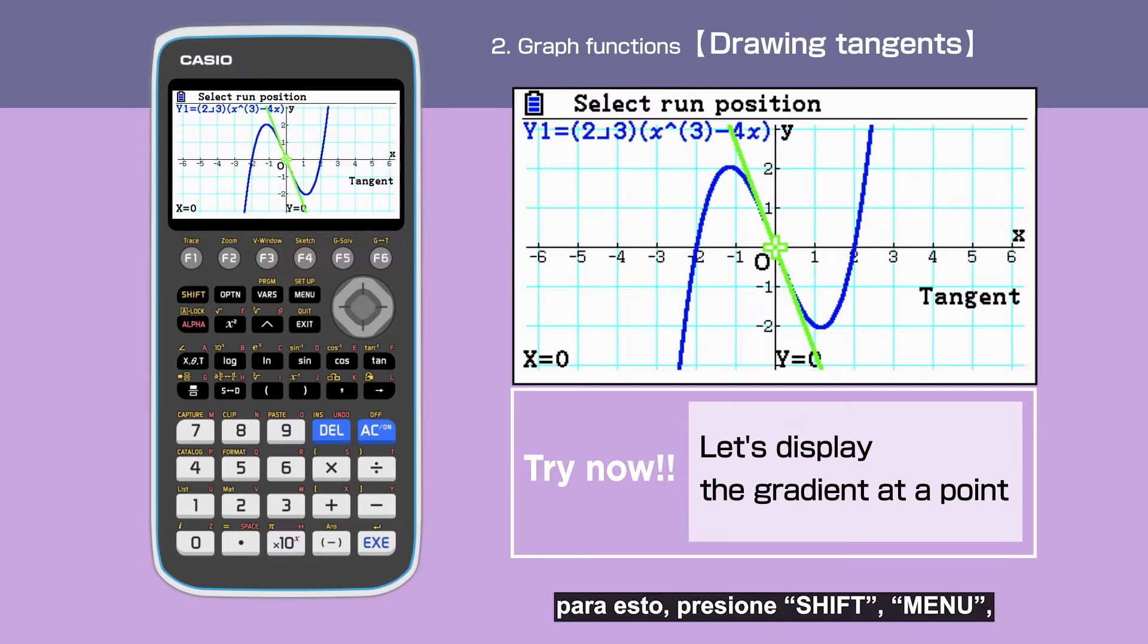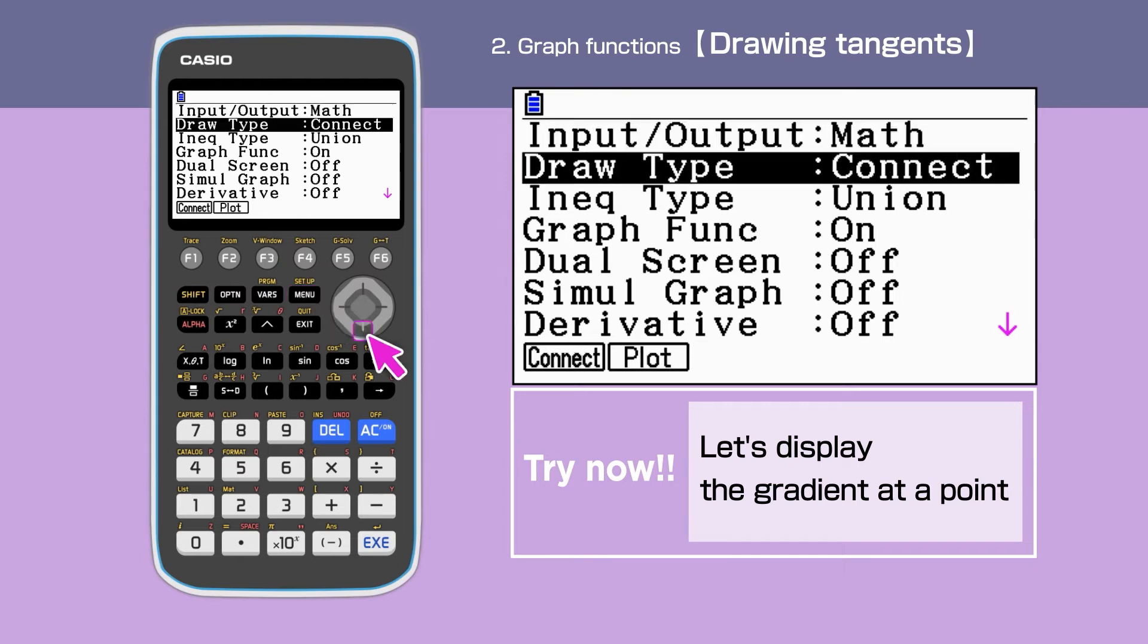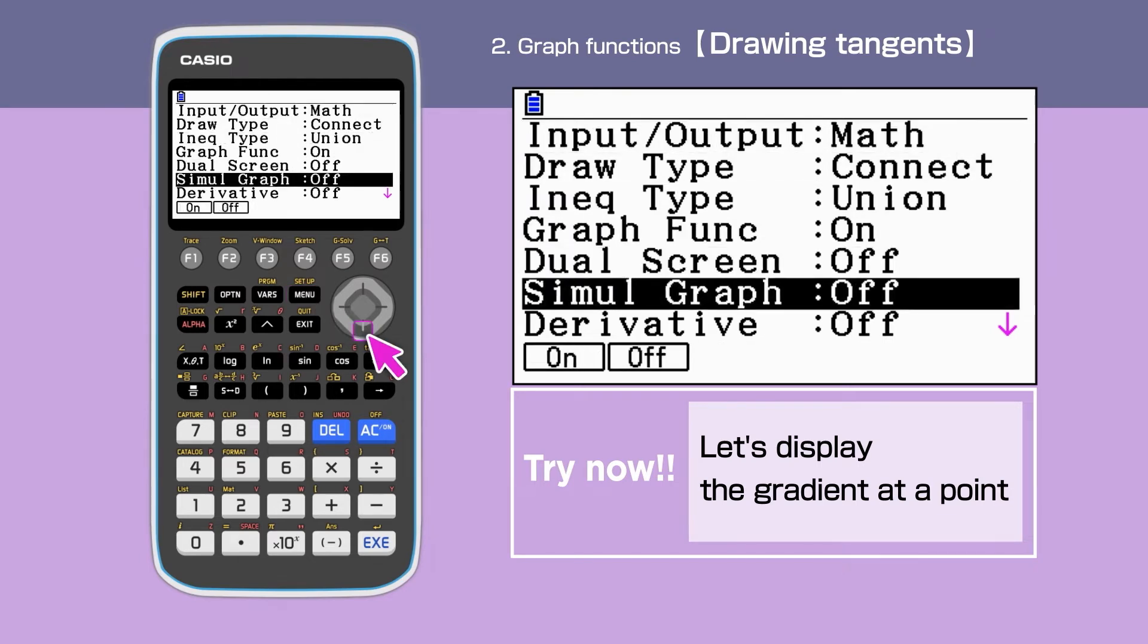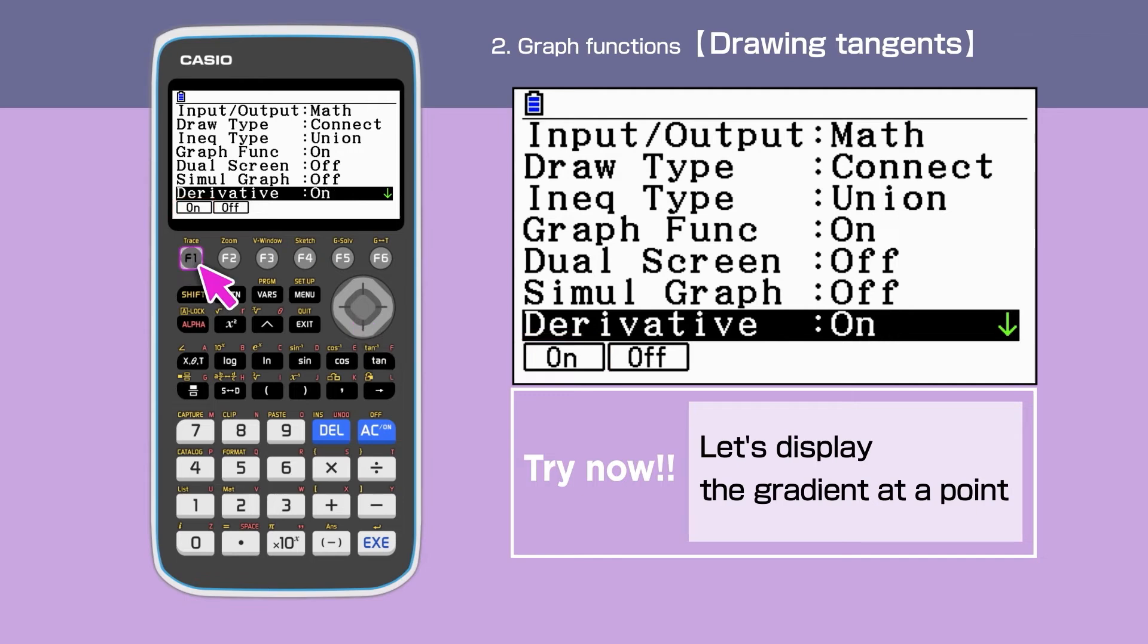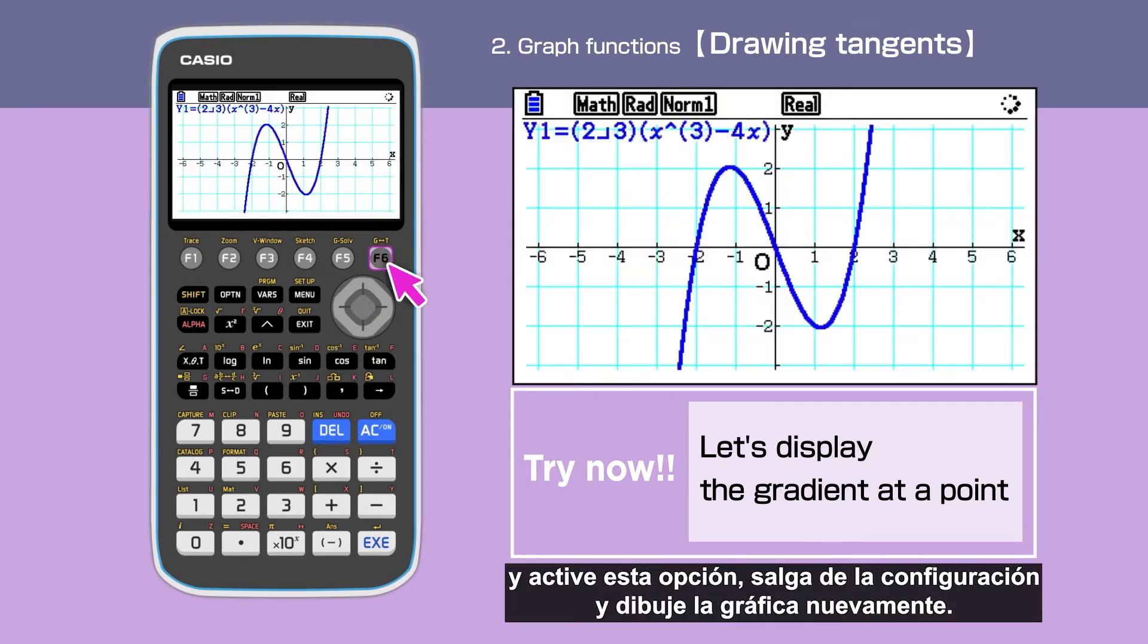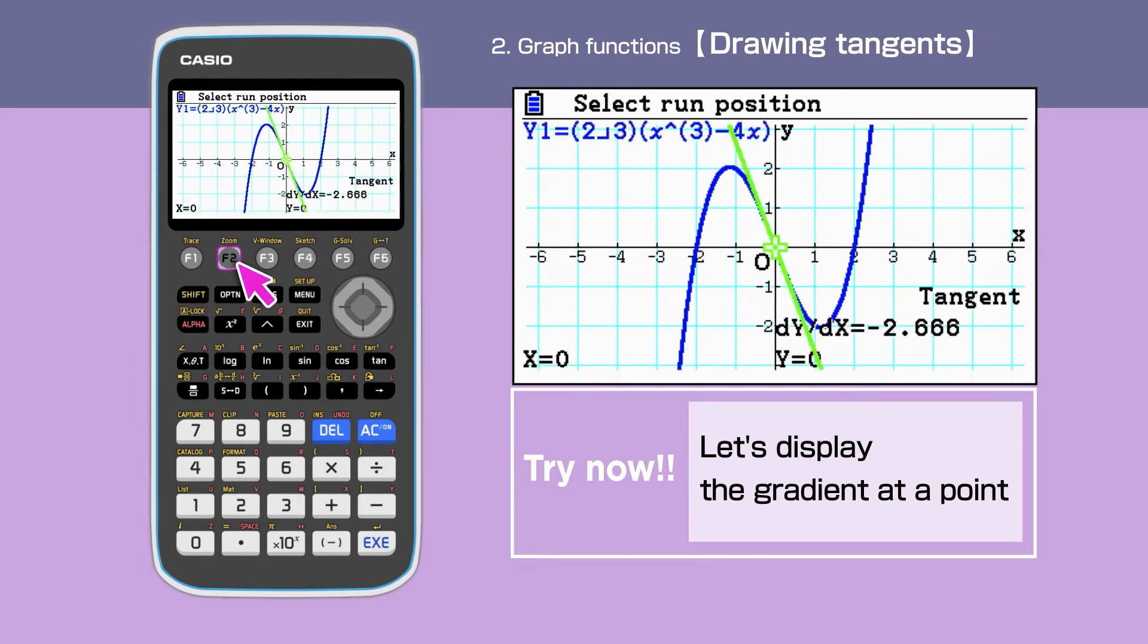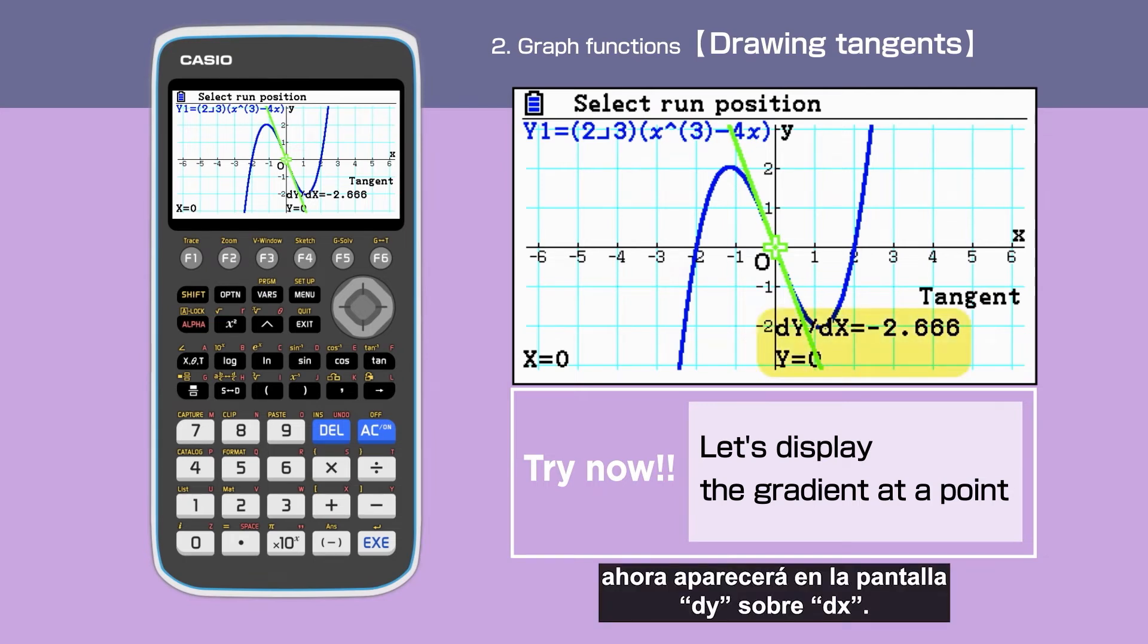For this, press Shift, Menu, and switch on the derivative. Exit the setup and draw the graph again. Press Shift, F4, then F2. This time, we have dy by dx on the same screen.